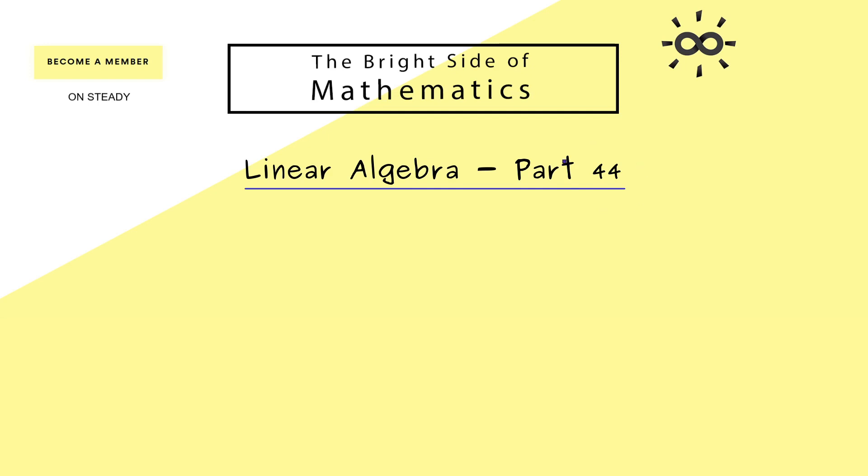We already mentioned that in general the determinant can calculate the volume of a parallelepiped. And in two dimensions everything is much easier because we just have a parallelogram. Moreover, we already know what to do to calculate the area of such a parallelogram.